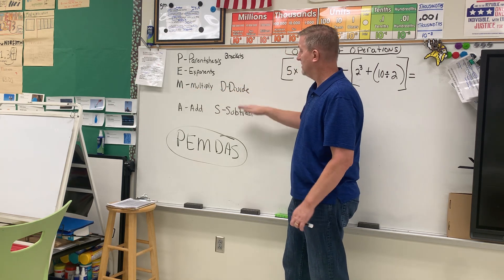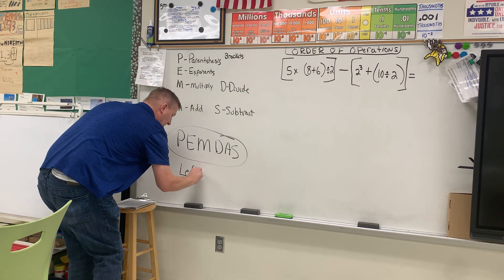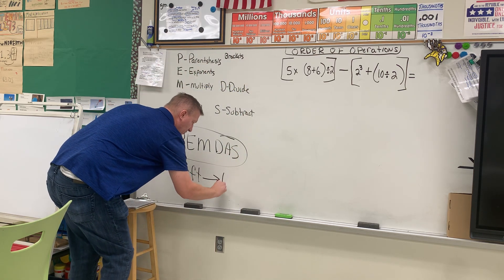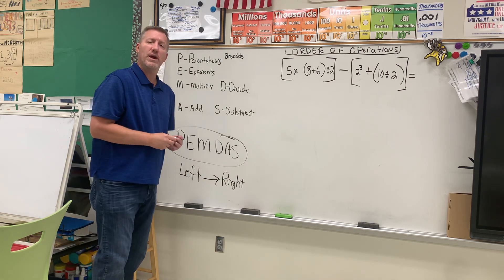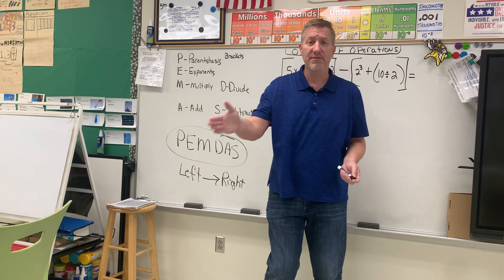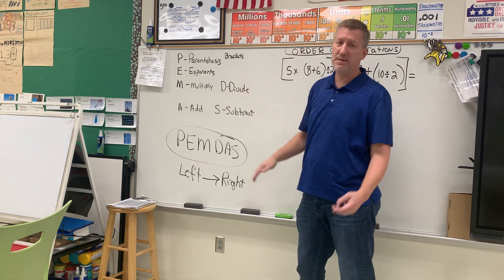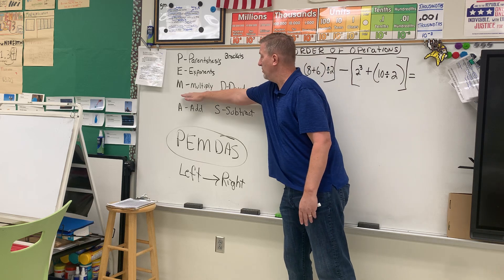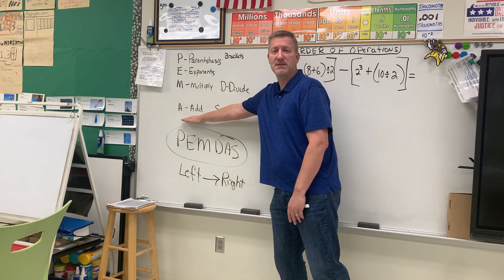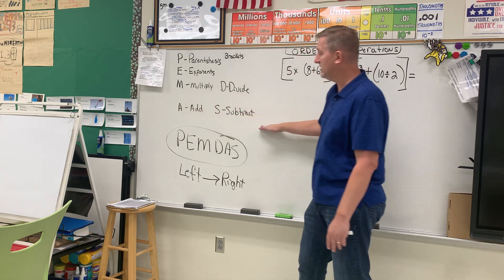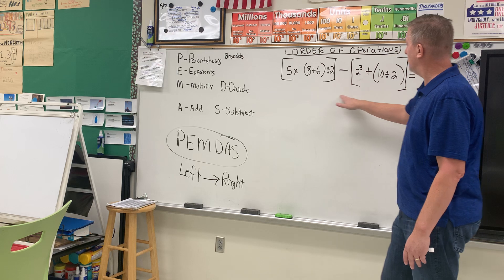Parentheses, exponents, multiply, divide, add, and subtract — in that order. If two operations happen at the same time, you do them left to right, the same way we read left to right on the page. So if multiply and divide happen at the same time, you do what's on the left first, then the right. Same with add and subtract — left first, then right.